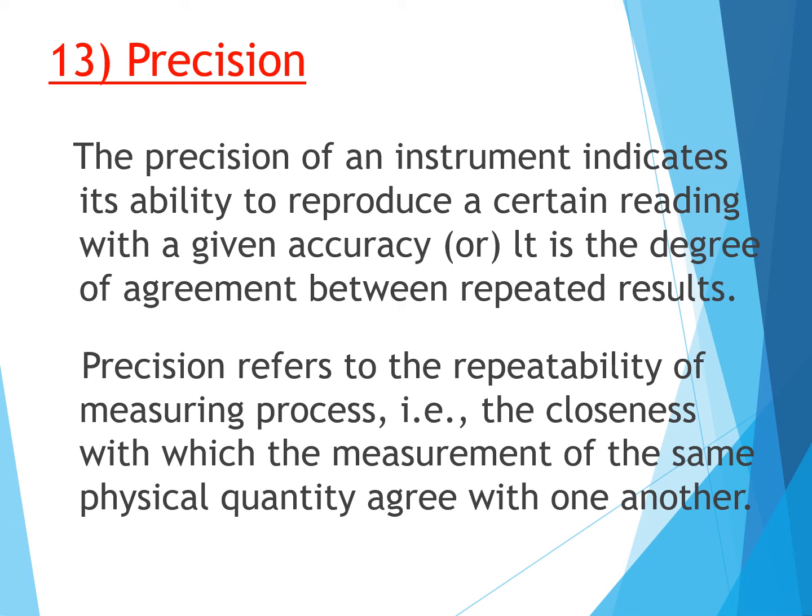The precision refers to the repeatability of the measuring process — the closeness with which measurements of the same physical quantity agree with one another. If the value changes between measurements, then the precision is low.